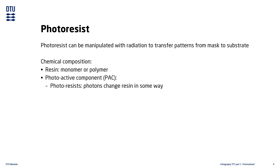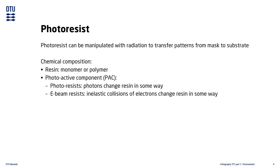Some photoresists are not actually photoactive. An example of this is resist used for electron beam lithography, which is instead electron active. In these resists the chemical change is caused by inelastic collisions between electrons and the resin polymer. The outcome is essentially the same — it just uses a different type of radiation to cause the chemical reaction.